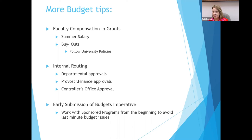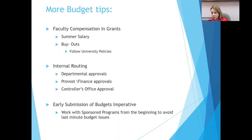All grants have to be internally routed, and you have to follow your chain. Everyone in the chain needs to be aware that you are engaging in a possible commitment of your effort, especially your department chair and your college. Usually what we do on our routing sheet is we have them sign off by their department chair and then by their dean. Then it comes to us, the research and sponsored programs office, where we look at the commitments and make sure everything is aligned with all university policies and practices.